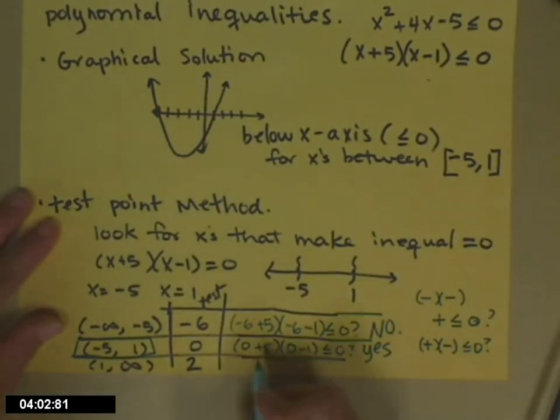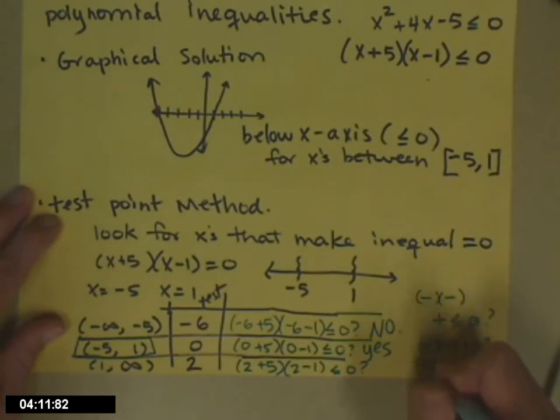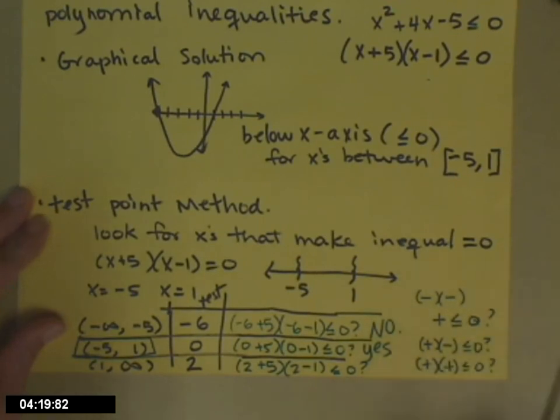And we'll check that last point. So two plus five times two minus one. Is that less than or equal to zero? So I get a positive, two plus five is seven. Another positive, two minus one. Is that less than or equal to zero? A positive times a positive is a positive. Is that less than or equal to zero? It is not.